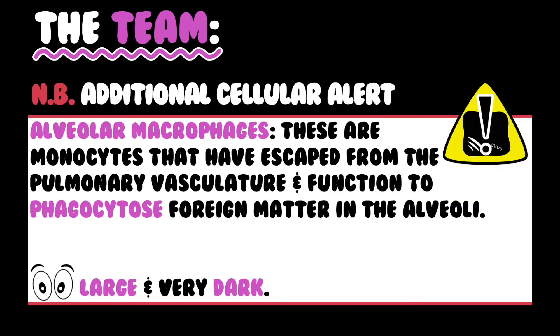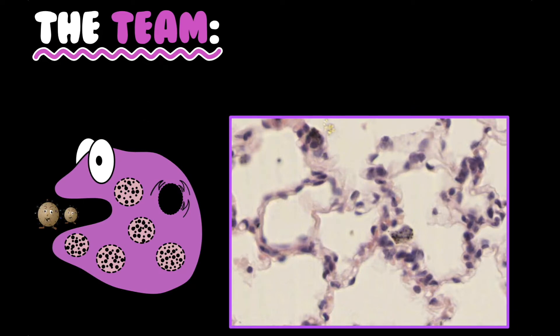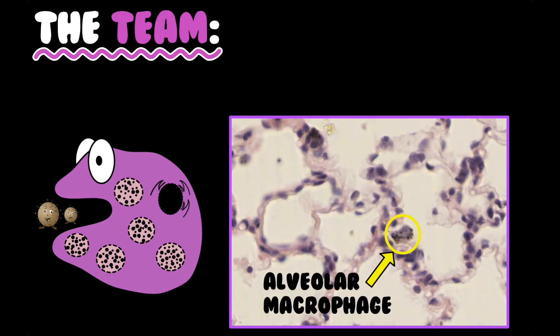Additional cellular alert: alveolar macrophages. These are monocytes that have escaped from the pulmonary vasculature and function to phagocytose foreign matter in the alveoli. They are very large and dark, as you can see from this singular alveolar macrophage.